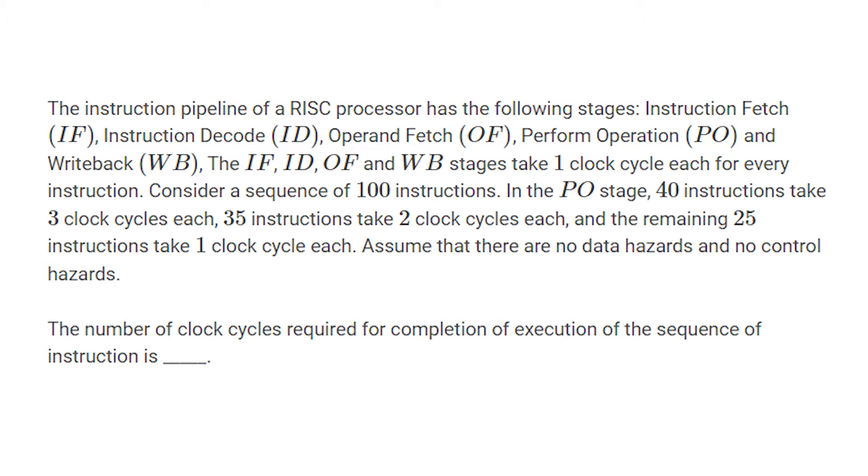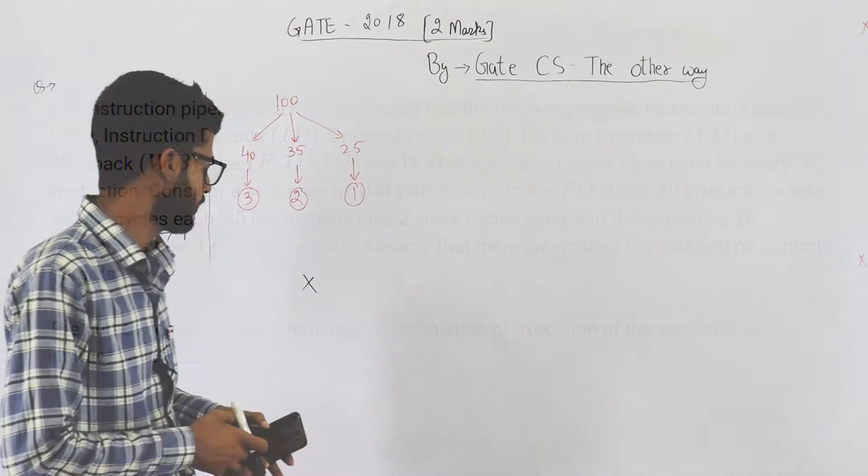Consider a sequence of 100 instructions. In the PO stage, 40 instructions take 3 clock cycles each, 35 instructions take 2 clock cycles each, and the remaining 25 instructions take 1 clock cycle each. Assume that there are no data hazards and no control hazards.